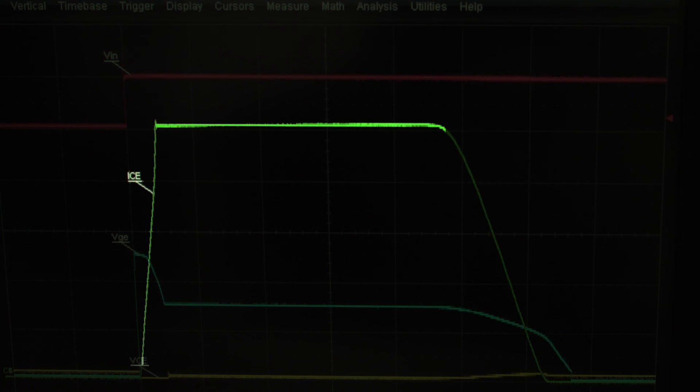If the system remains in current limit for too long, it will reach the maximum dwell point and a soft shutdown will activate. Here you can see the current being limited by the driver IC and the coil being slowly shut down to prevent a dI/dt induced spark.